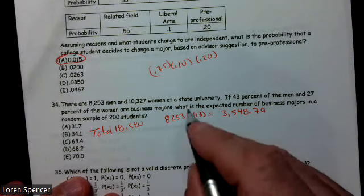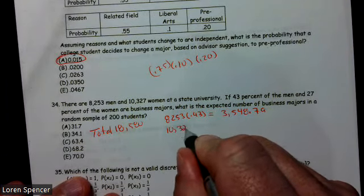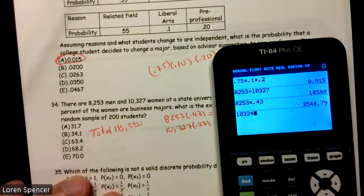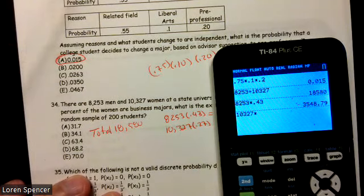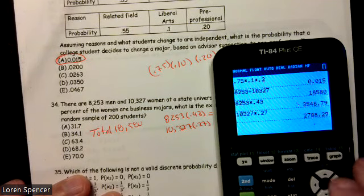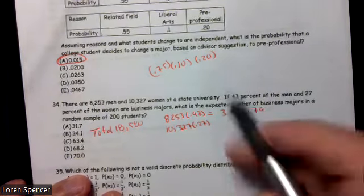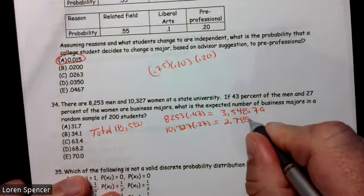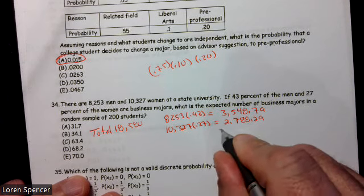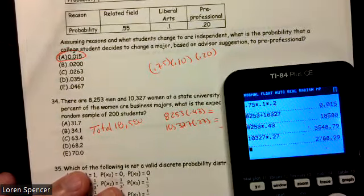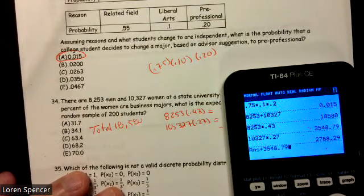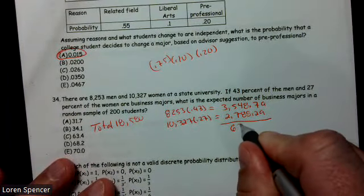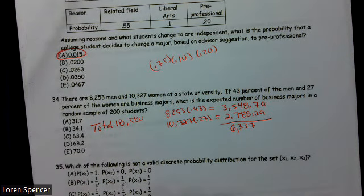So 8,253 times 0.43. So 3,548. And I'm going to go ahead and leave the decimal. It's actually 0.79. So that's how many men there are. And 27% of the women. So 10,327 times 0.27. And I end up 2,788.29 are women that are business majors. So now I know how many men and women are business majors.